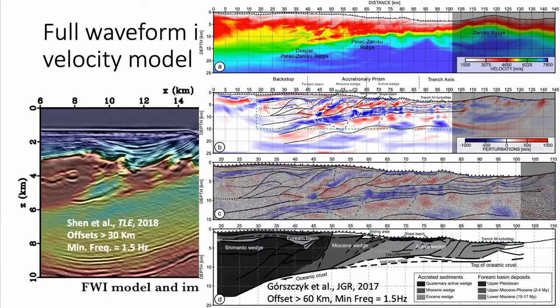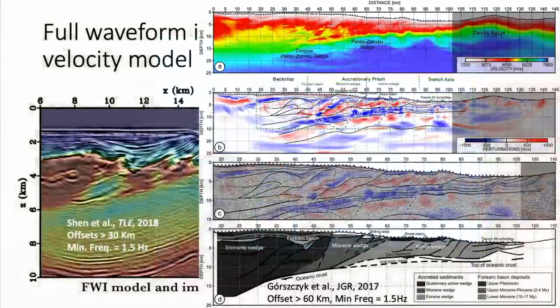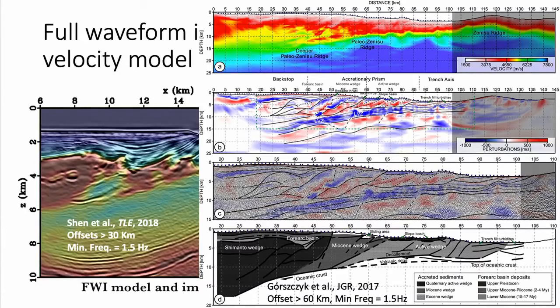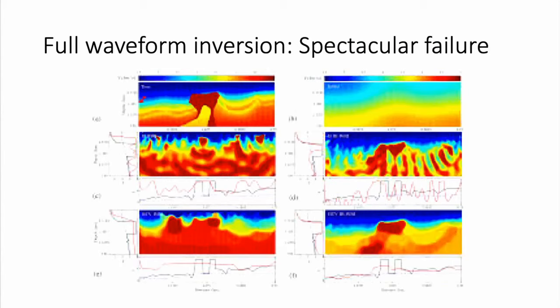FWI has become increasingly popular compared to conventional travel time tomography for global and regional seismologists. This example shows the Nankai Trough studied using a similar ocean bottom node acquisition deployed across the survey area. The maximum offset is more than 60 kilometers with a minimum frequency of 1.5 Hz. Similar acquisition and processing techniques have been applied to study regional geology — understanding subduction zones much better than before.